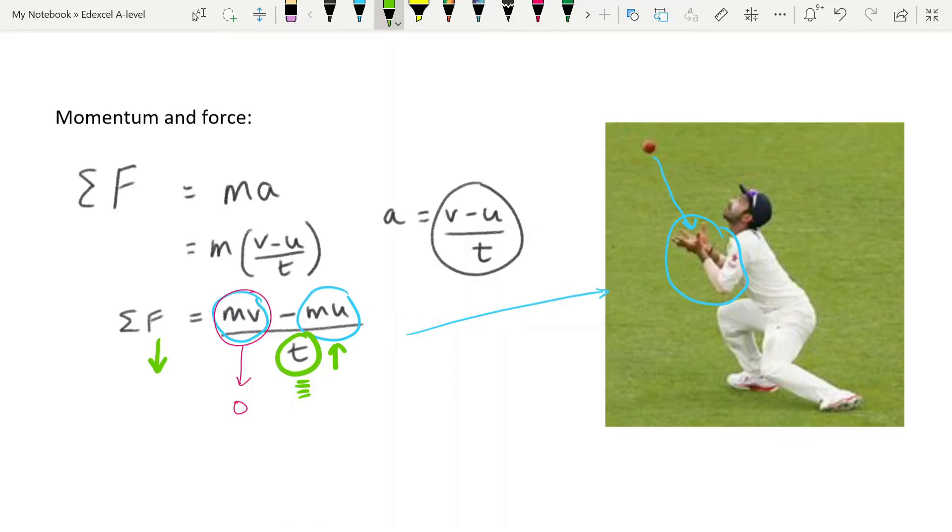And of course, bumpers on cars, crumple zones on cars, seat belts, and airbags all work in exactly the same way. The idea is, again, increase the time so that you decrease the force. Now of course we know that this expression, the resultant force is equal to mass times acceleration, is Newton's second law. And so this is the first connection that we see between momentum and Newton's laws. And in fact, Newton himself quoted his second law in terms of the change in momentum, and not as acceleration. It was just derived to the acceleration equation later.